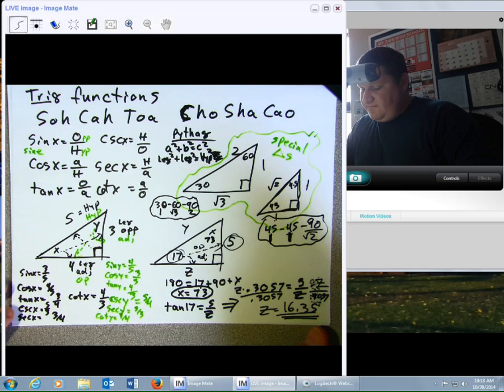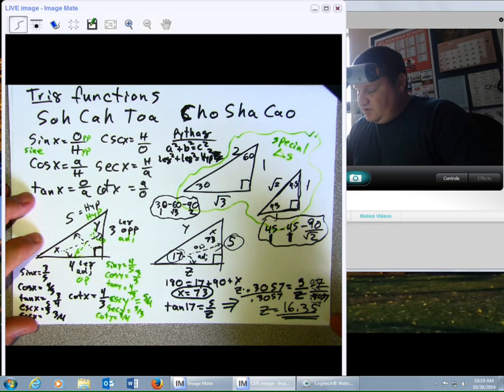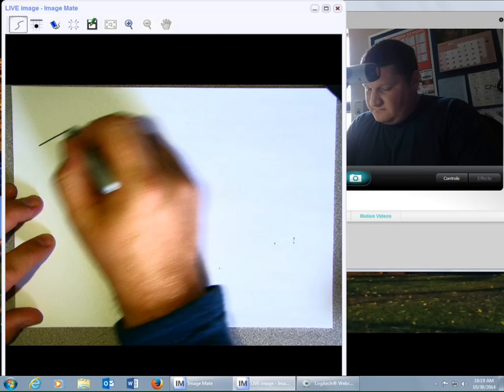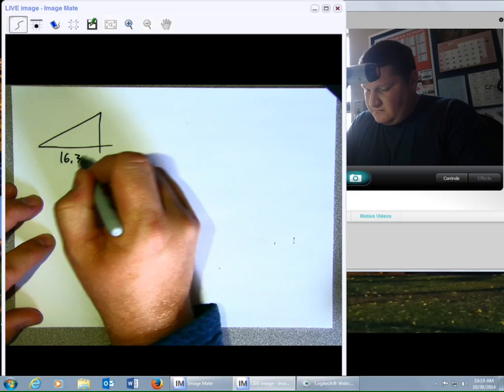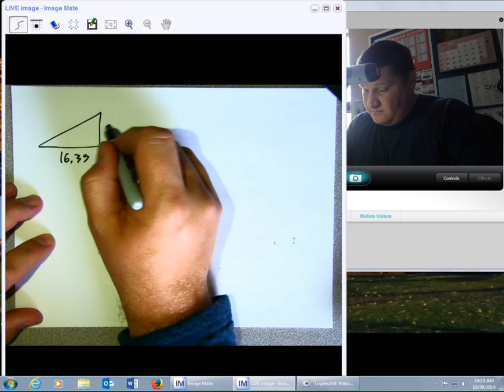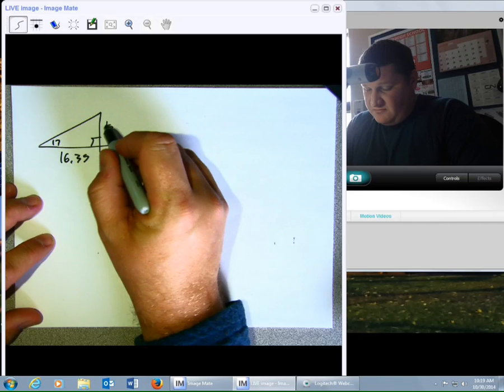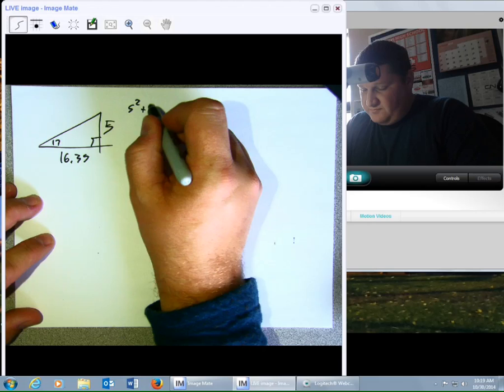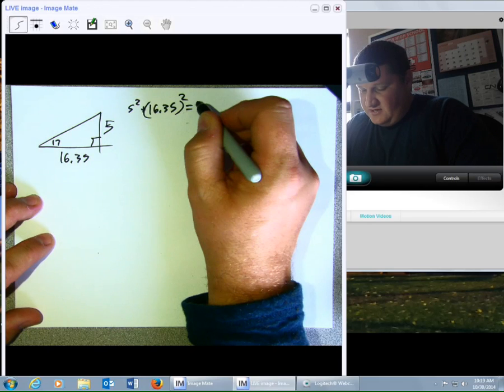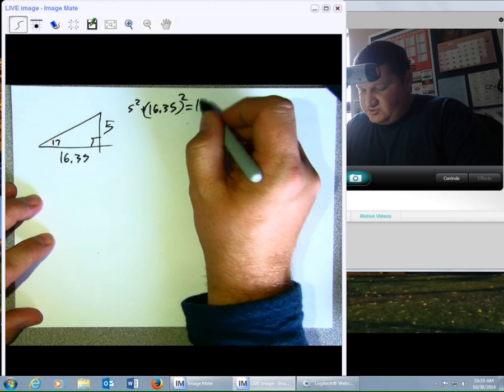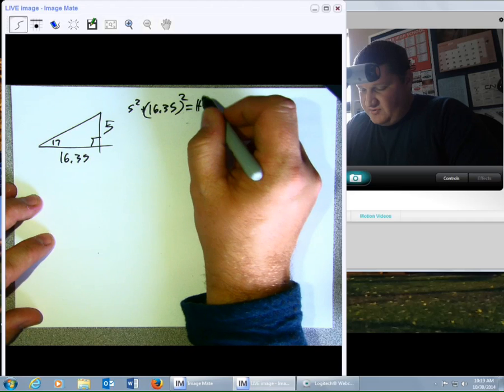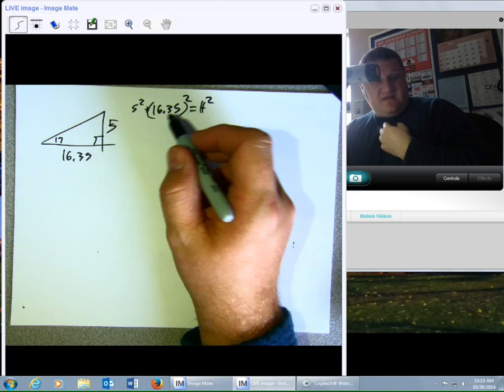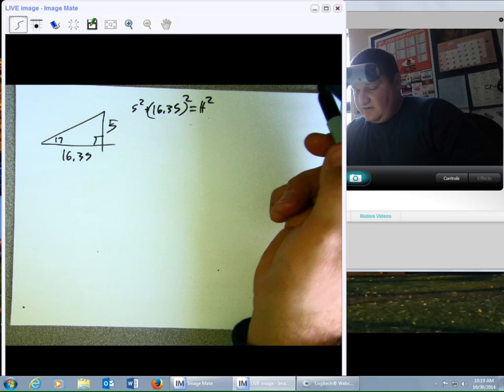Now, to find the last side, I could do a couple things. I could say 5 squared plus 16.35 squared equals hypotenuse squared. However, I've already rounded this number. I would then be taking a rounded number and squaring that rounding. And then putting it together with something else. And then square root. I'm going to have rounding all over the place.